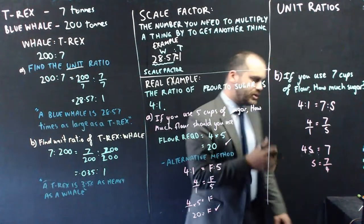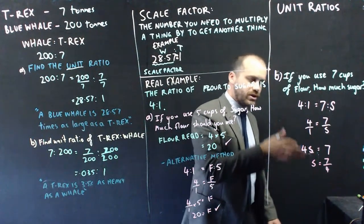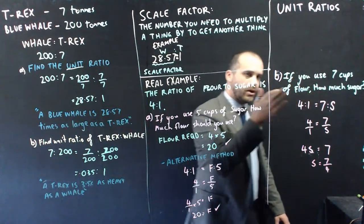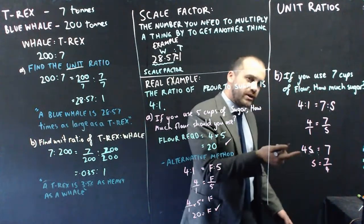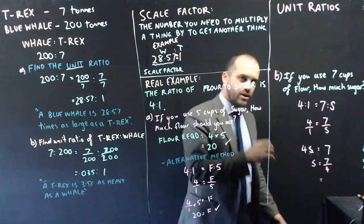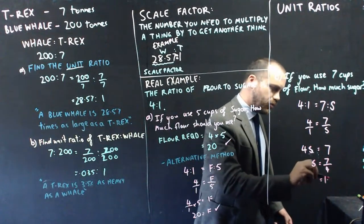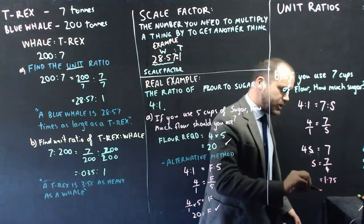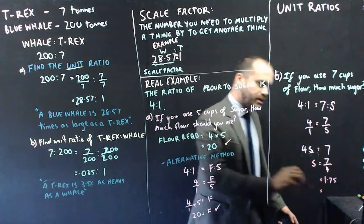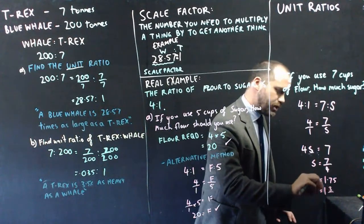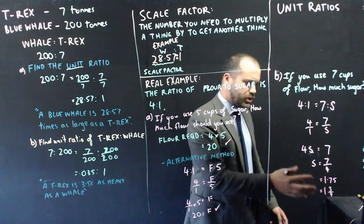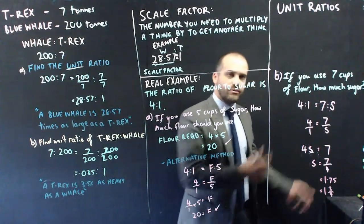So, what does this say? It says you should use 7 fourths of a cup of sugar if you're using 7 cups of flour. You might find it easier to see that in terms of a decimal. So, that's going to be 1.75. If you type that into your calculator, that's what you'll get. You could also see it as a mixed number. It's going to be 1.75 cups of sugar, which is the sort of thing that you might see in a recipe book somewhere.